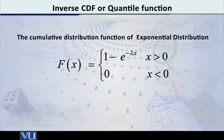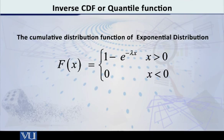What is the cumulative distribution function? If you integrate it from 0 to x, we get F(x) = 1 − e^(−λx), where x is greater than or equal to 0.